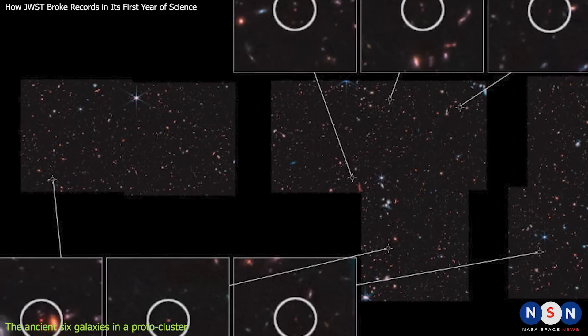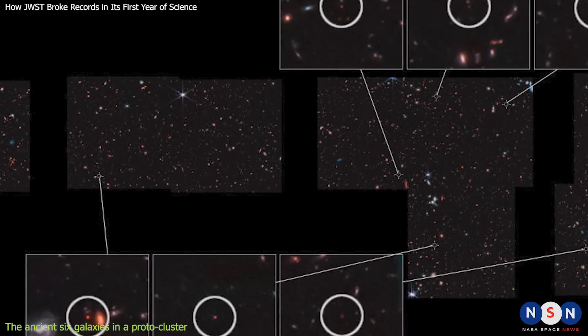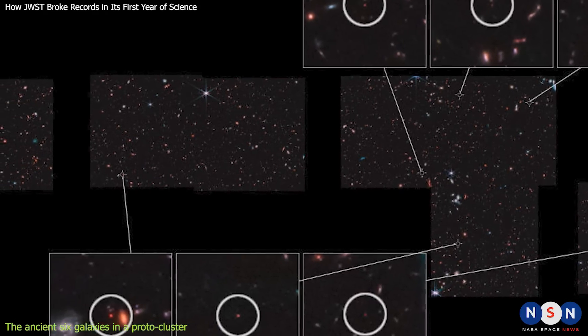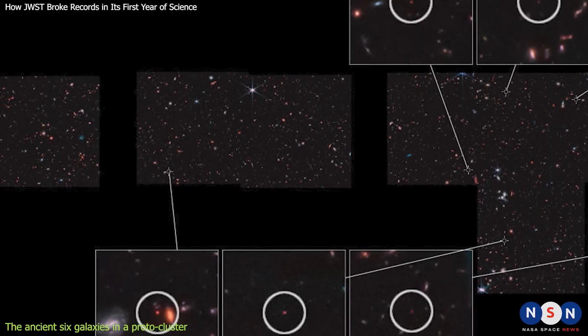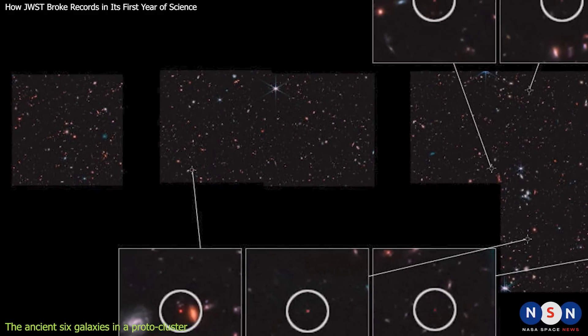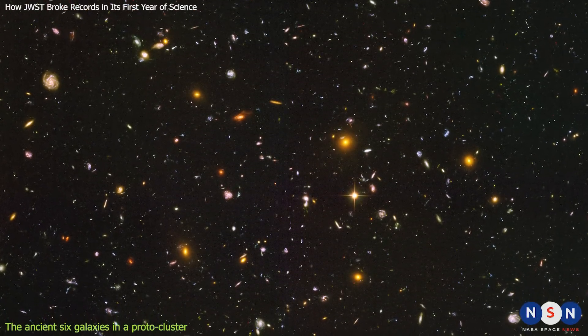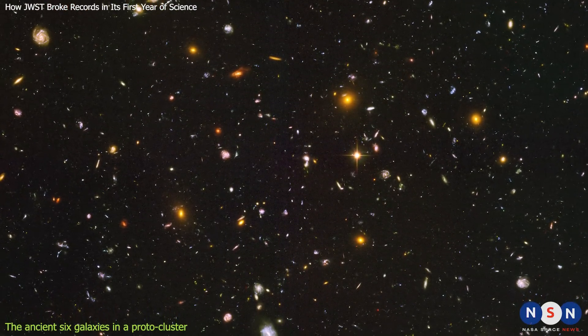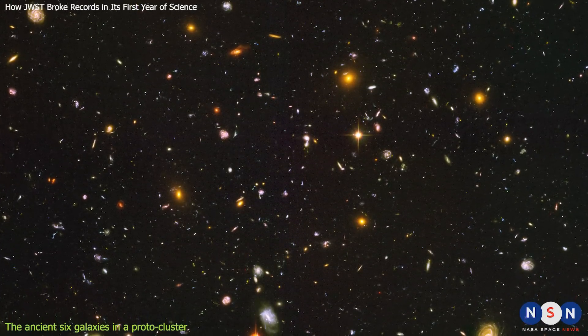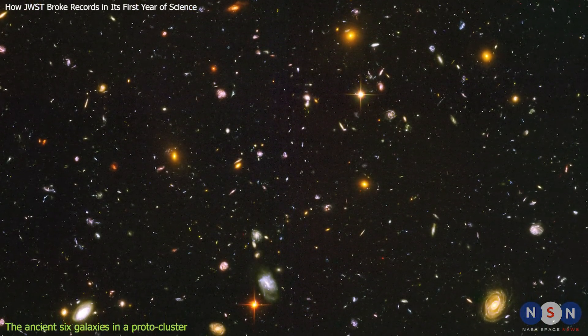In November 2022, a team of astronomers announced that they had discovered six ancient galaxies that date back to when the universe was only 800 million years old. These galaxies are among the oldest and most distant galaxies ever detected. They are located in a region of space called the Hubble Ultra Deep Field, which is one of the most studied areas in the sky. The Hubble Ultra Deep Field contains thousands of galaxies spanning billions of years of cosmic history.